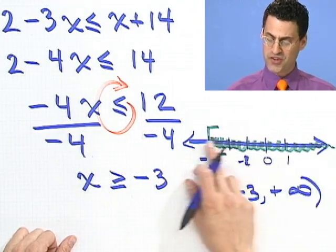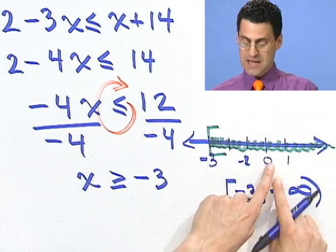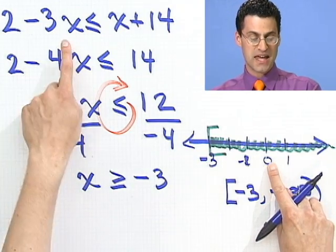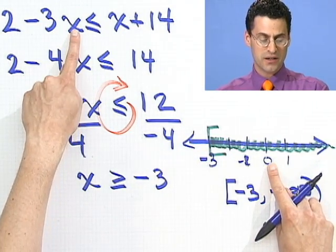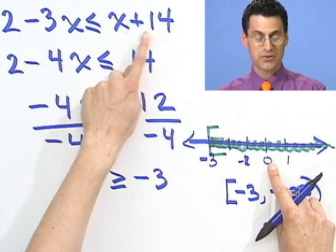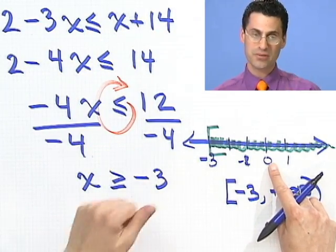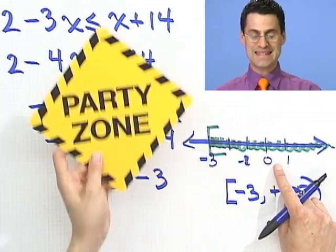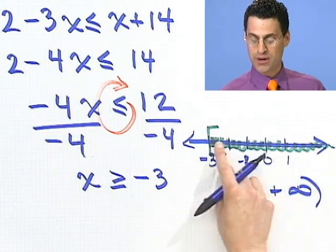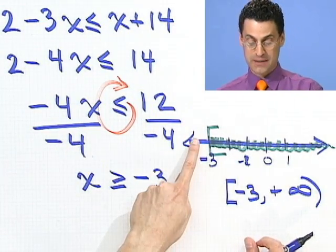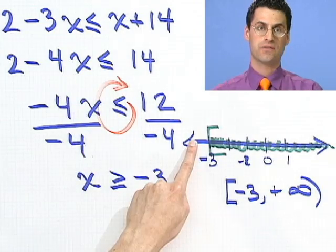And you can actually now see all the solutions. Pick anything in here. For example, if you pick 0, that should satisfy this. Let's see if it does. If you plug in a 0 for x, I see 2 is less than or equal to 14. That's true. So, party time. And you can pick any point in here, and you'll see the same thing. But if you pick the point way out here, that would not satisfy this. Up next, we'll take a look at some even more exotic inequalities. I'll see you there.